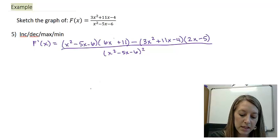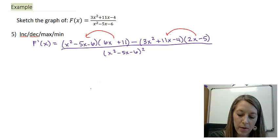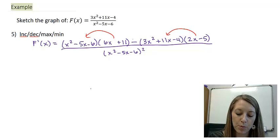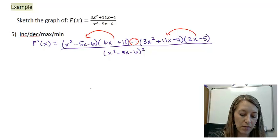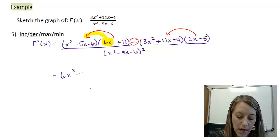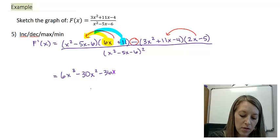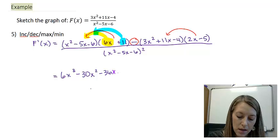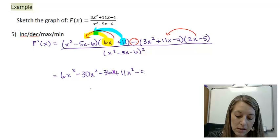I'm going to simplify this by distributing everything in my smaller parentheses to my larger parentheses and then distributing my negative. So if I distribute my 6x through all of this, that gives me 6x³ minus 30x² minus 36x. Then if I distribute my 11 through all of that, that gives me plus 11x² minus 55x minus 66.